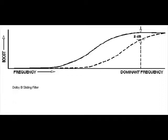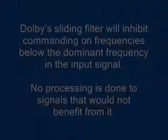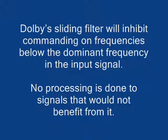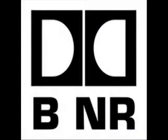No companding would be done below that frequency. This filter slides from 300 Hz all the way up to 20,000 Hz. So in effect, if the signal is loud enough to mask the noise anyway at a particular frequency, no processing is being done. The same thing happens in the decoder — there's a sliding filter there too, but it slides in the other direction. So that's basically how Dolby B noise reduction works.